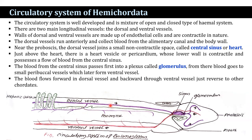The dorsal vessel runs anteriorly, collecting blood from the alimentary canal and body wall near the proboscis. The dorsal vessel joins a small non-contractile space known as the central sinus or heart. Just above the heart there is a heart vesicle or pericardium, whose lower wall is contractile and drives the flow of blood from the central sinus.